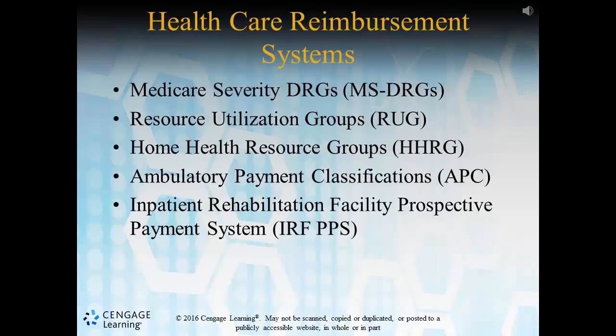Now let's review the various prospective payment systems in existence. A prospective payment system is a pre-established reimbursement rate system for healthcare services. Diagnosis-related groups, or DRGs, were implemented in 1983 through legislation called the Tax Equity and Fiscal Responsibility Act. DRGs use diagnosis groupers to reimburse hospitals at a predetermined rate for Medicare inpatient services.